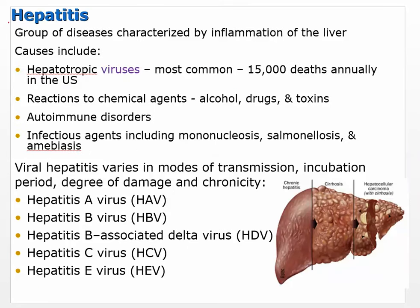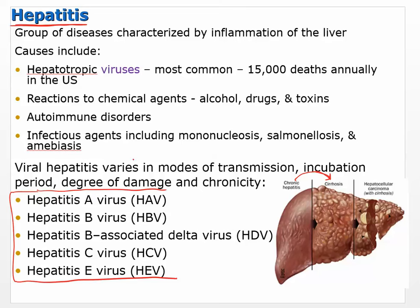When we think about liver pathology, we tend to think about hepatitis and then cirrhosis, which is an advanced form. Hepatitis is an inflammation of the liver. Cirrhosis is when that tissue kind of dies and is replaced by scar tissue — a more advanced phase of liver disease. We have to be careful because hepatitis can be caused by viruses, but hepatitis itself is just a group of diseases characterized by inflammation of the liver. It can be caused by viruses — most commonly — but also by reactions to chemical agents like alcohol, drugs, other toxins, and autoimmune disorders.